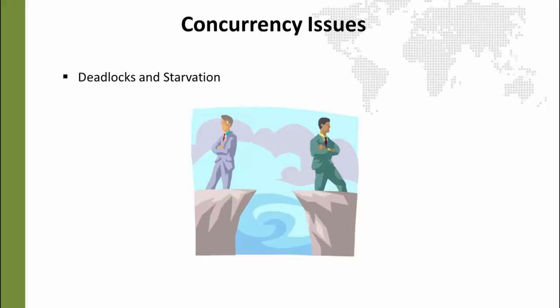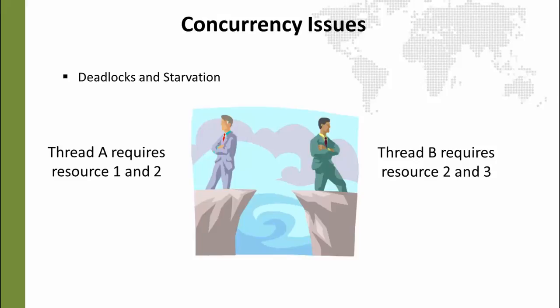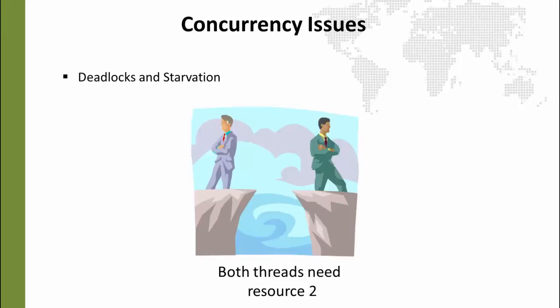The idea of deadlocks or starvation is that you have threads competing for resources. Because some threads might need multiple resources, they could get into a situation where neither can do anything because both are waiting to get that resource. When we solve the synchronization concurrency issue, we have to make it so that thread A can tell thread B: hold on, wait until I'm finished, and then you can do your thing.